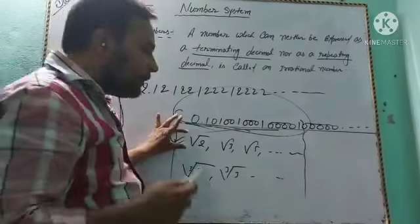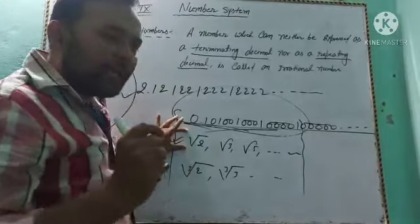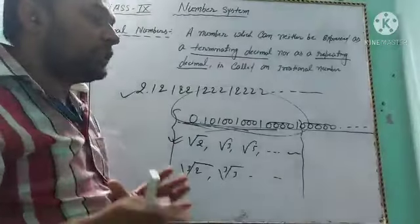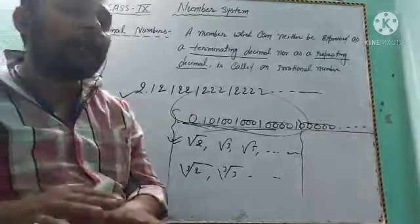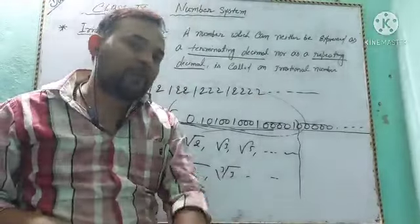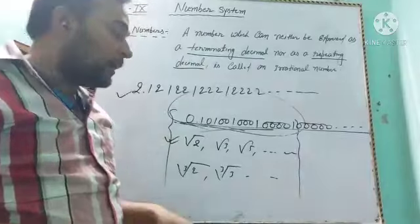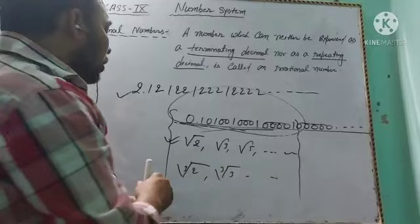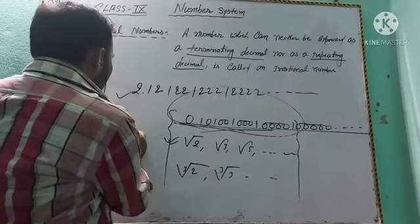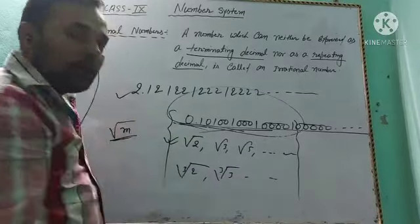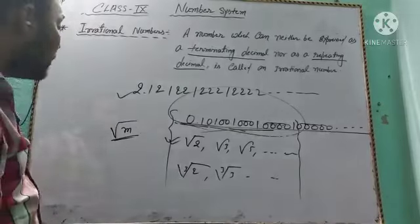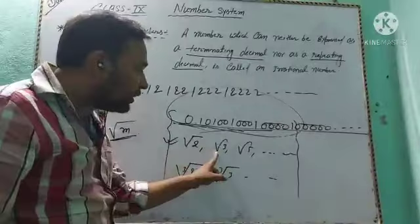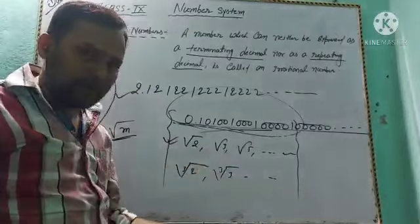Second type: if M is a positive integer, then √M is an irrational number. For example, √2, √3, √5, √6, √7 are irrational numbers.